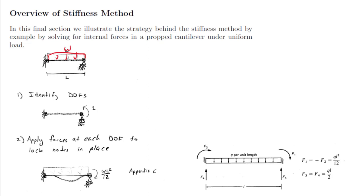Now come the important steps in the procedure. The first main step identified here is to hold all of the nodes locked. So even though the right-hand node can in reality move, we start by holding it in place. That requires a certain force to hold that in place. That force is called the fixed-end force that we considered previously.